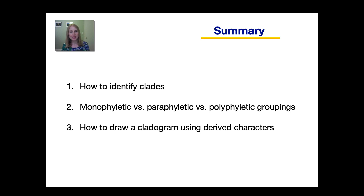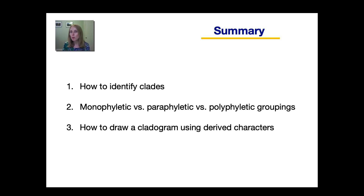Let's summarize this lesson. First, I discussed how to identify clades. Then I talked about what a monophyletic group is — a monophyletic group is the only one that accurately shows evolutionary history. Whereas paraphyletic and polyphyletic groupings are more like pointers to mistakes in either our everyday language or our previous understandings. And lastly, I introduced you to drawing a cladogram using derived characters.